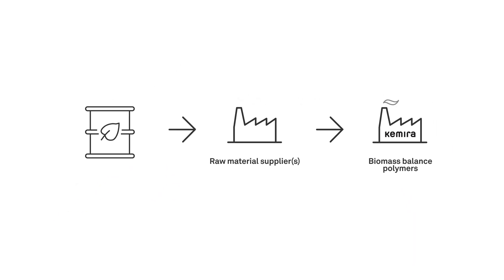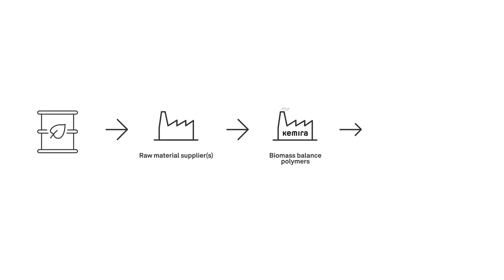These raw materials are then used by Chimera to make polymers for water treatment, paper making, and mining.